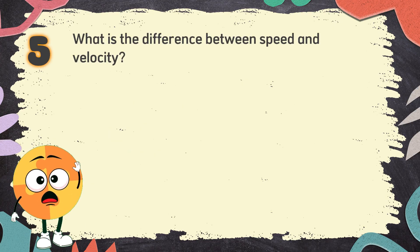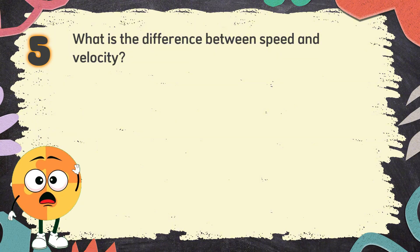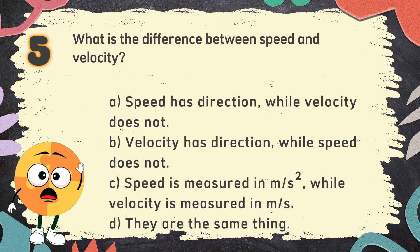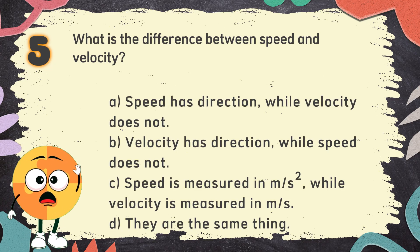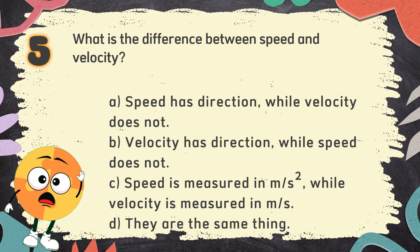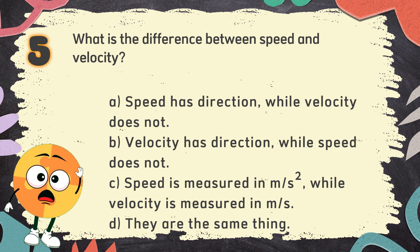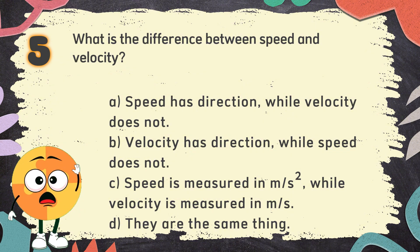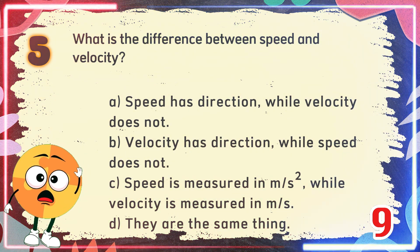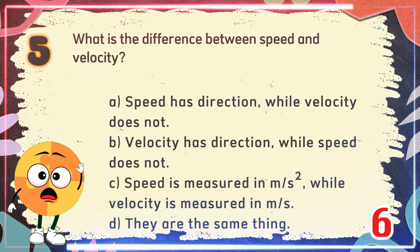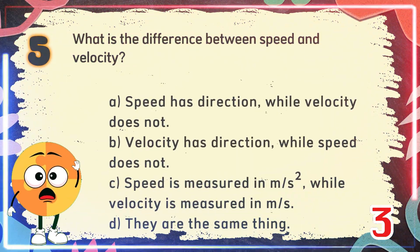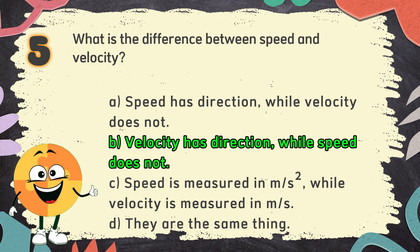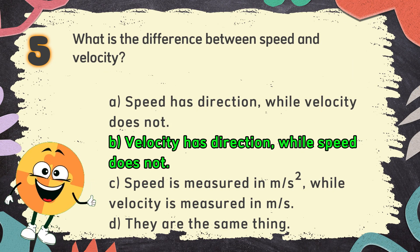Number 5. What is the difference between speed and velocity? The choices are A. Speed has direction while velocity does not, B. Velocity has direction while speed does not, C. Speed is measured in meters per second squared while velocity is measured in meters per second, D. They are the same thing. The correct answer is B. Velocity has direction while speed does not.